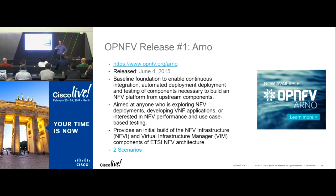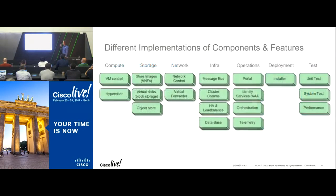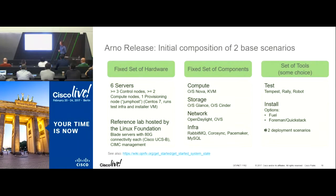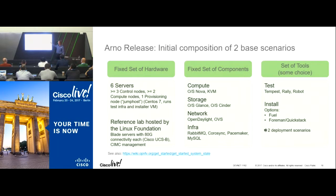We follow a river naming scheme in alphabetical order. Arno was the first river chosen — a relatively basic release. We put the carpet in the room. From a componentry perspective we chose OpenStack for compute, storage, networking control, and basic infra. For networking we chose OVS as a forwarder — slow, but available — and OpenDaylight as a controller. We ran OpenStack out of the box with a network controller underneath, then ran a couple of tests against it.